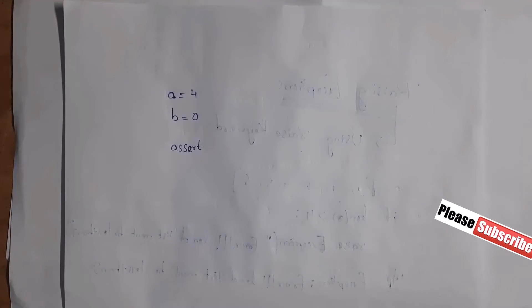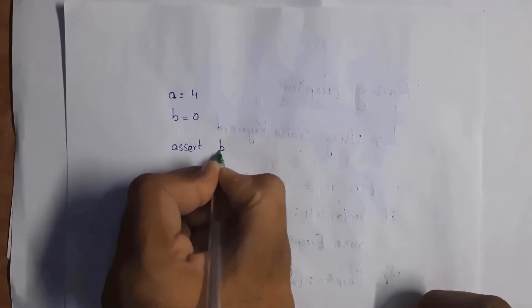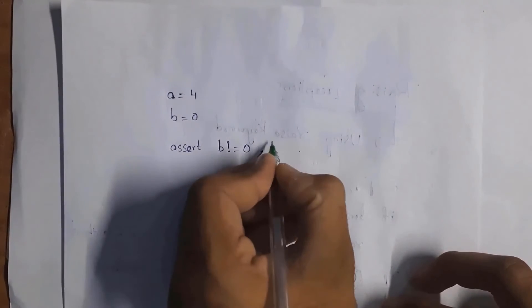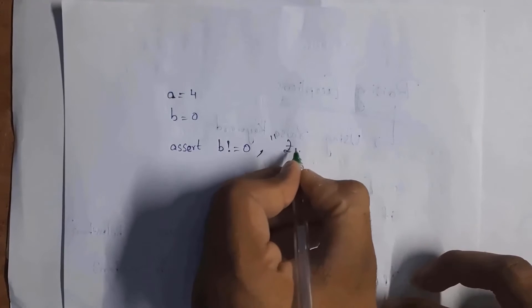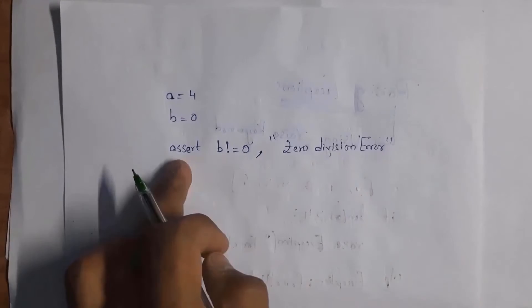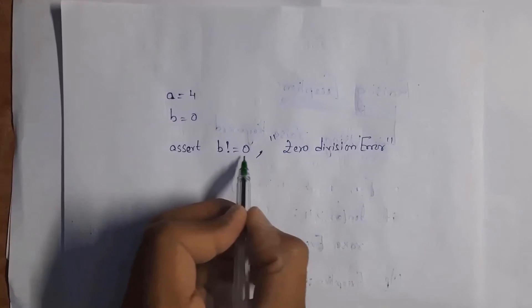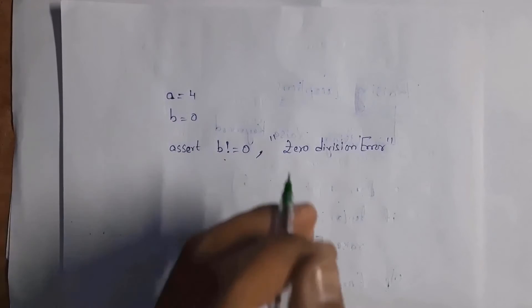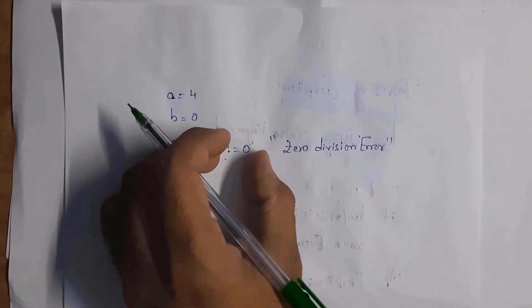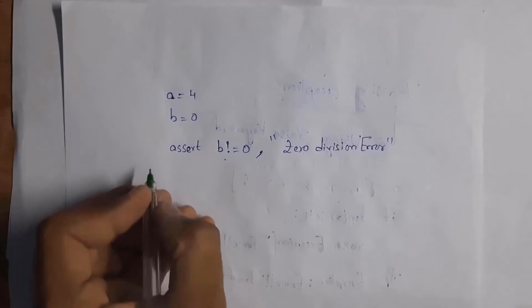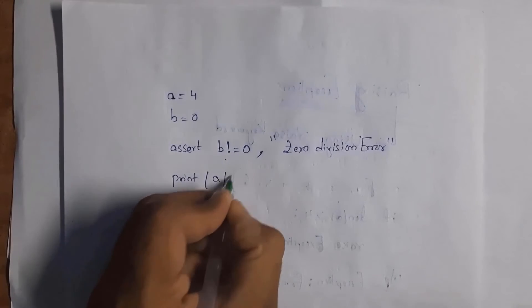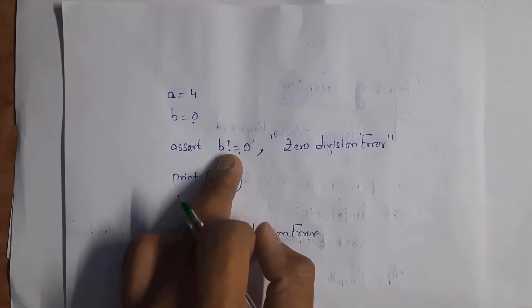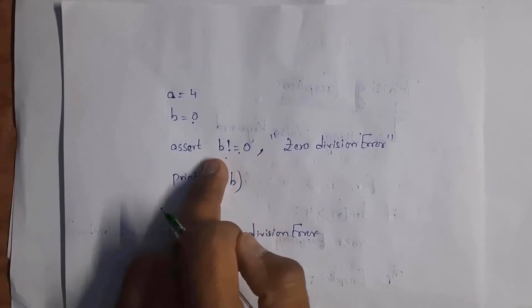Here I have a = 4 and b = 0. As you know, we cannot divide any number by zero. For assertions we use the assert keyword. I written: assert b != 0, 'zero division error'. After the condition, take a comma and give an error message. If this condition is satisfied, execution continues; if not, it displays the error message. Then I write print(a / b).